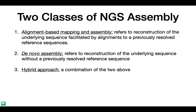You can also use a hybrid approach — for example, filtering reads that map to your reference and then using those reads for de novo assembly, or doing a de novo assembly and then using a reference for the scaffolding step. A hybrid approach can give you the best of both worlds and is also helpful in assessing how good or problematic your assembly is.